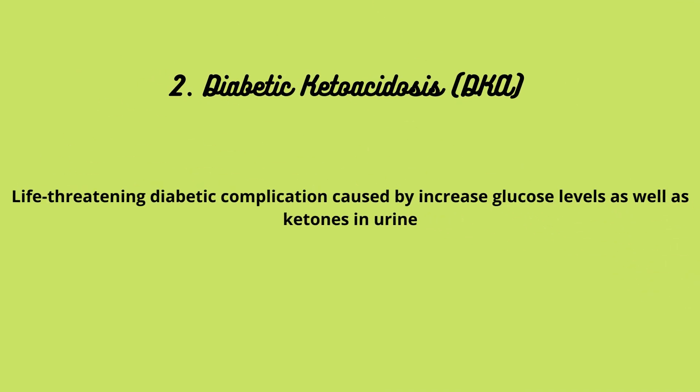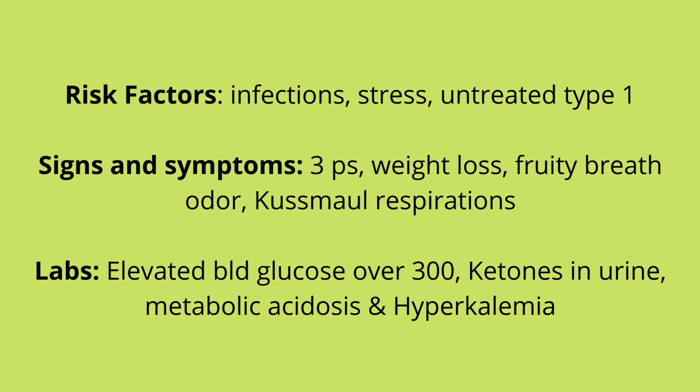DKA, diabetic ketoacidosis, is a life-threatening diabetic complication that causes increased blood glucose levels as well as ketones in urine. It is more common in type 1 diabetes. Risk factors include infection, illness, stress, and untreated or undiagnosed type 1 diabetes. Signs and symptoms include the three P's: polydipsia, polyphagia, and polyuria.